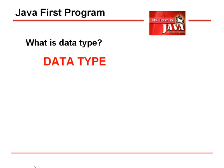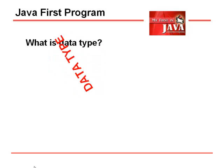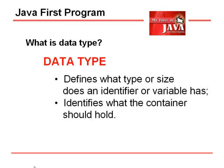What is a data type? When we talk about data type, it defines what type or size an identifier or variable has. When we're defining our variable name, we need to set what type or size it will hold for that particular container.